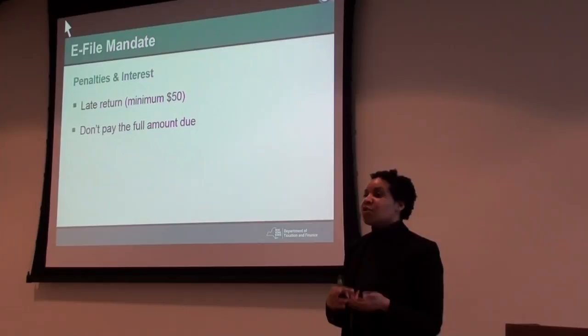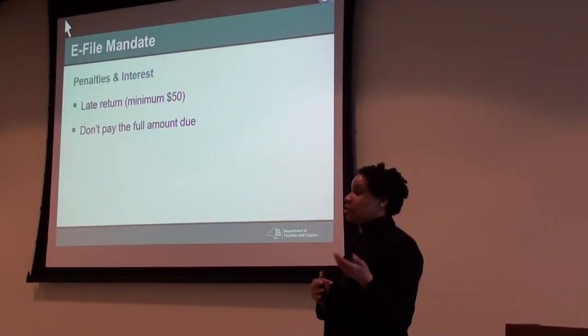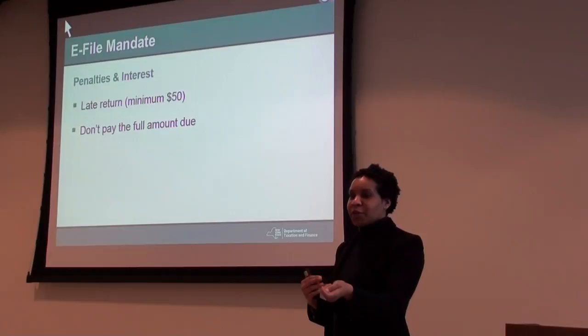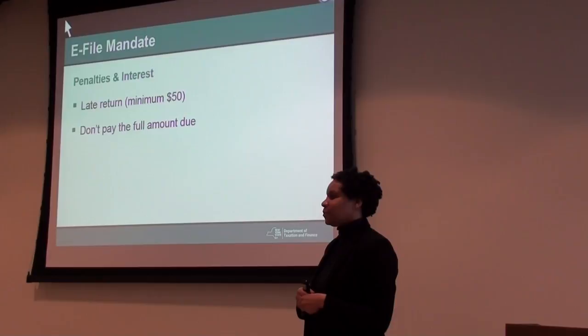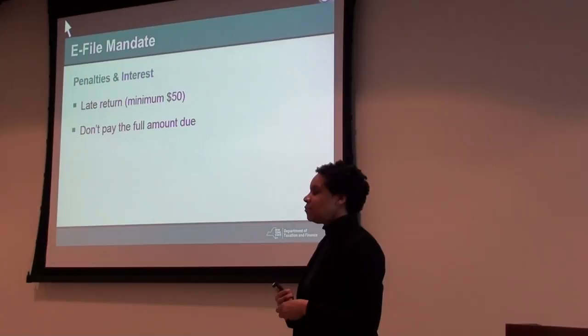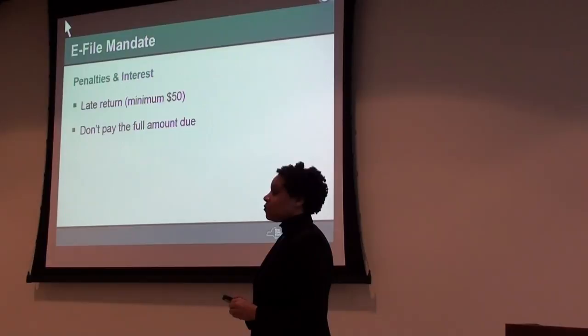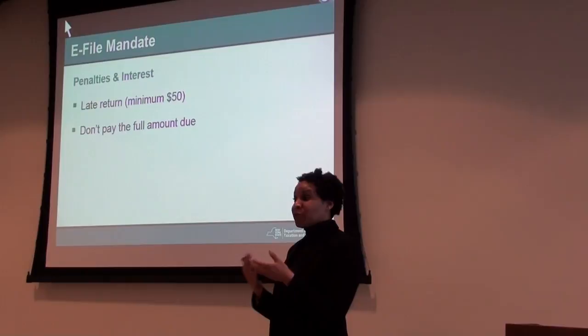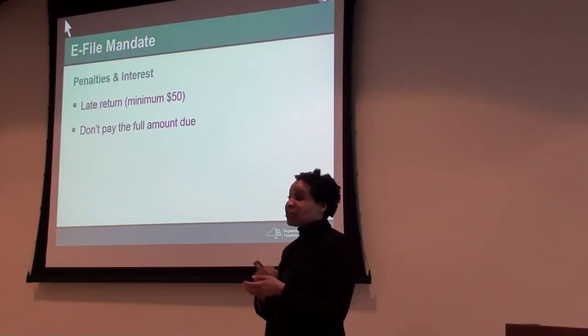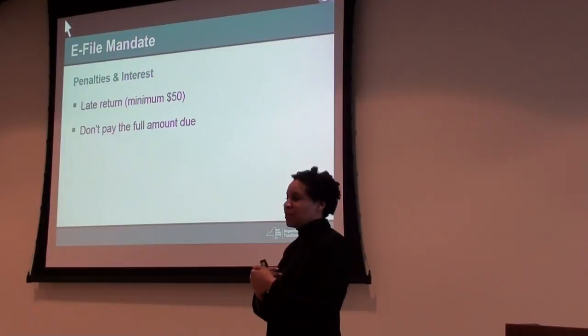If you sold something, charged tax, and the customer later claimed exemption and wants their money back, you give the refund and file for a credit of the sales tax — it comes back to you. But if you didn't charge tax and now try to invoice the customer for it and they refuse, you may have to pay it yourself. Going forward, always charge the tax and cite the applicable regulation if questioned.